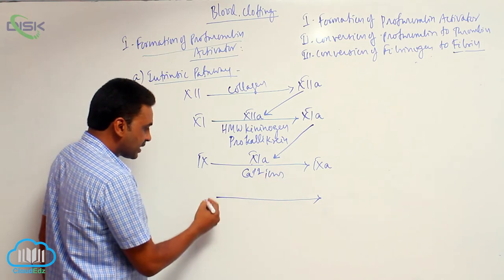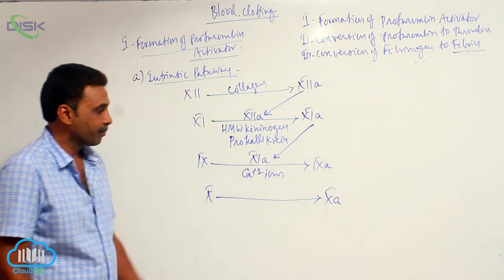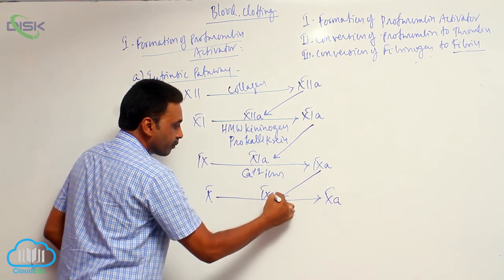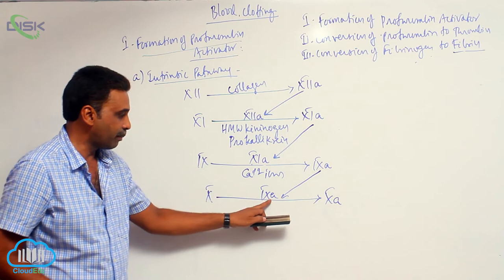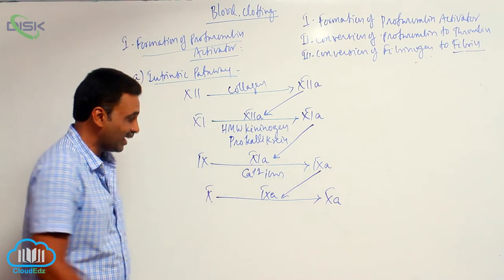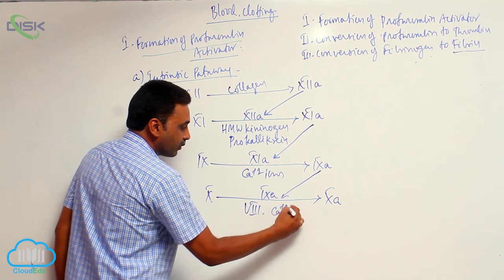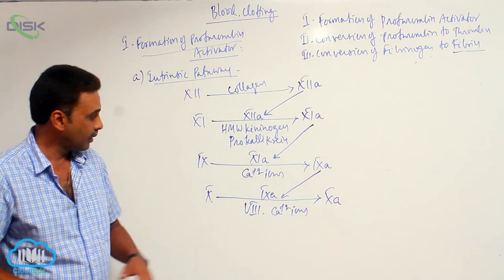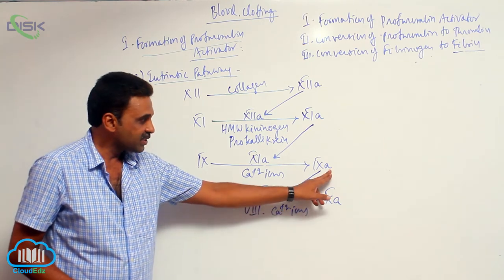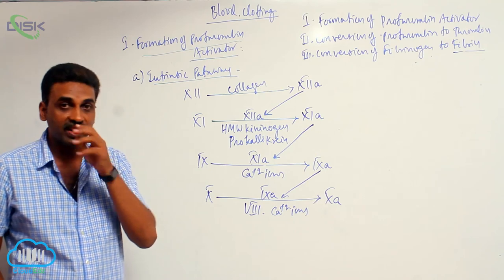The next step is activation of factor number 10. Factor number 10 is activated in the presence of activated factor number 9. Activated factor number 9 converts factor number 10 into its active form, and in this process factor number 8 and calcium ions are also required. So factor number 10 is activated in the presence of active factor number 9, factor number 8, and calcium ions — which is factor number 4.